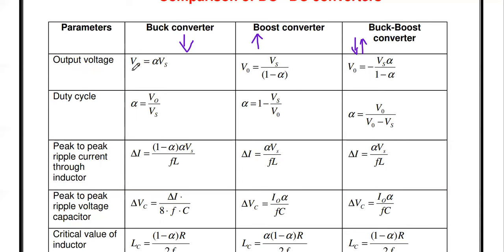You should know the formulas. The output voltage of the step-down converter (buck) is V0 = α × Vs, where α is the duty cycle. The duty cycle is the ratio of on-time divided by total time. The duty cycle value α should be less than 1 — it is a fraction. For the buck converter, output voltage is α × Vs, where V0 is the output voltage and Vs is the input voltage.